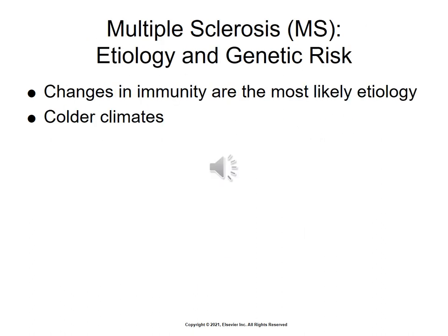Changes in immunity tend to be the most likely etiology for MS, but the environment may also contribute to its development. For example, the disease is more often seen in colder climates of the Northeast, Great Lakes, and Pacific Northwest states, and also in Canada.